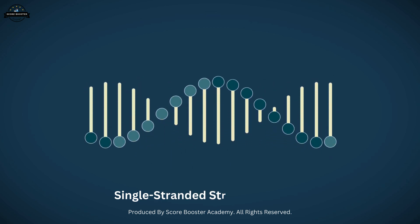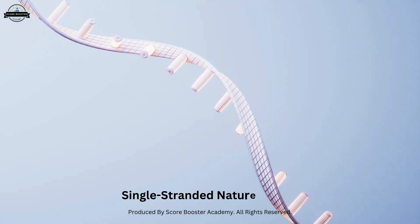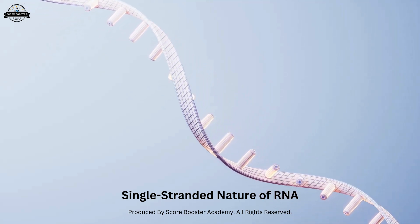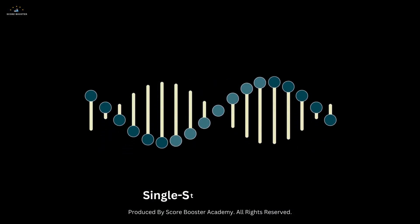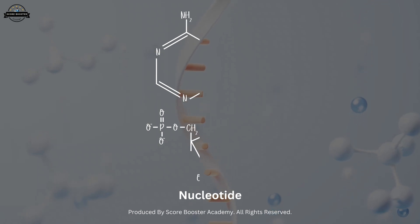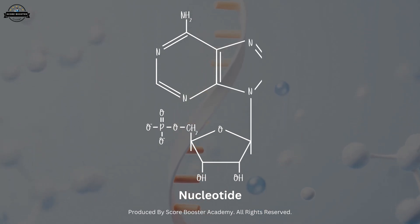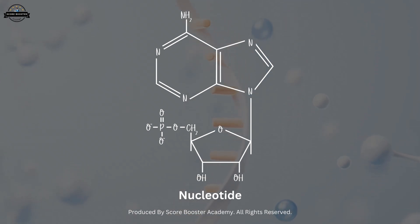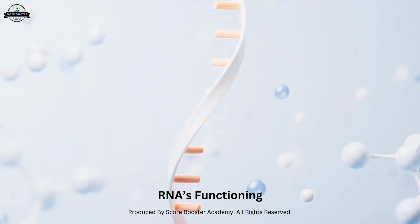RNA molecules are typically single-stranded. This allows them to fold into complex three-dimensional shapes. The single-stranded nature of RNA enables it to perform a wide variety of functions — it serves as a template for protein synthesis and can catalyze biochemical reactions. The single strand of RNA is composed of nucleotides, the building blocks of RNA. Each nucleotide consists of a nitrogenous base, a ribose sugar, and a phosphate group. The sequence of these nucleotides encodes genetic information, and their specific arrangement determines the RNA's function.